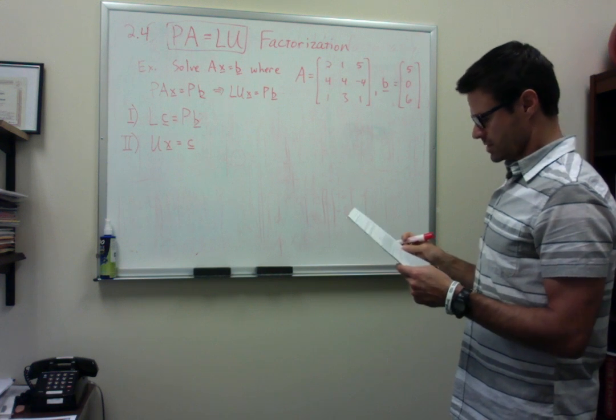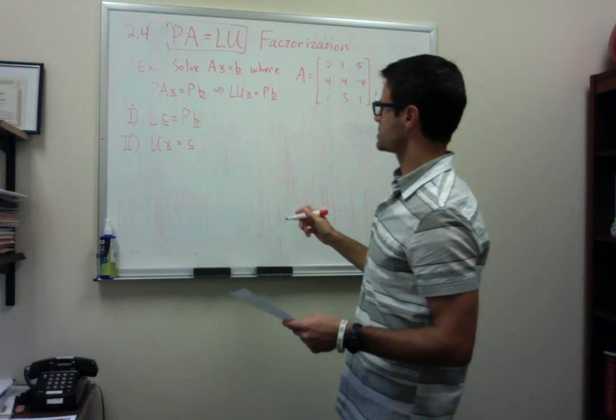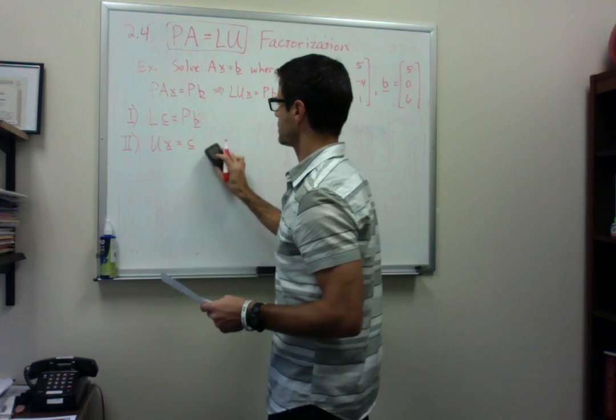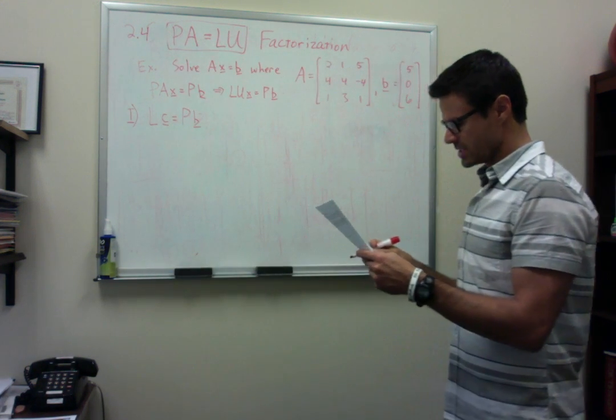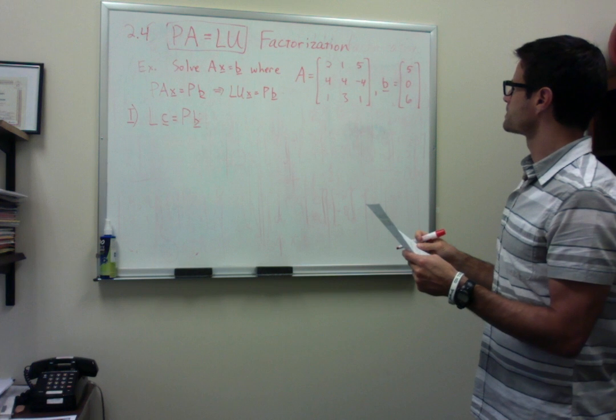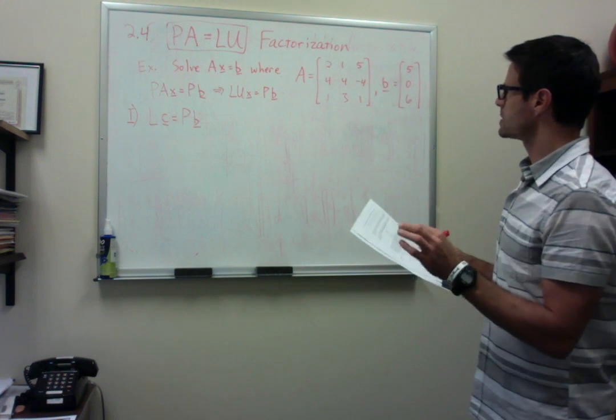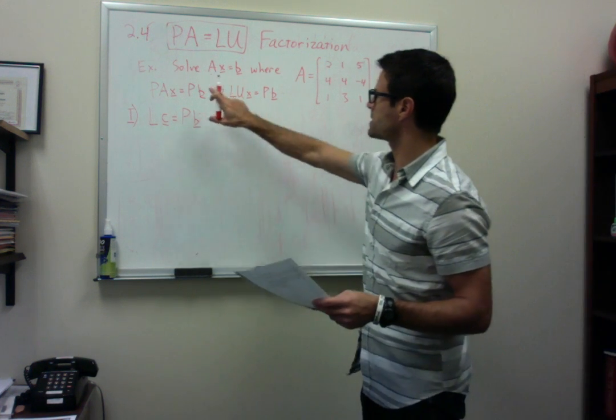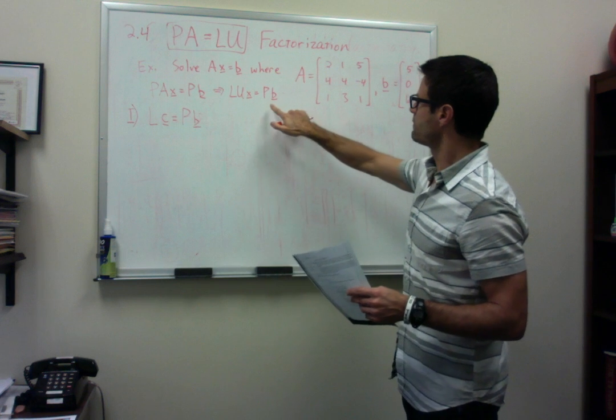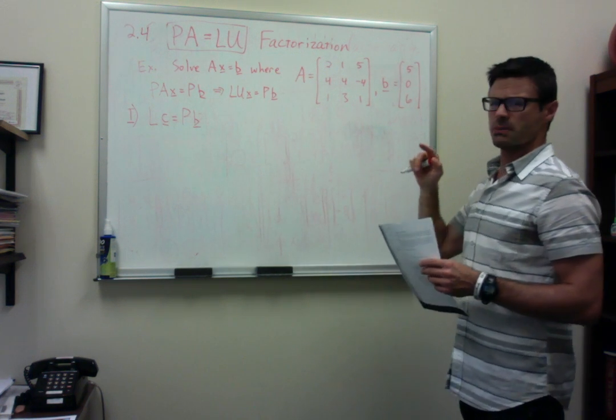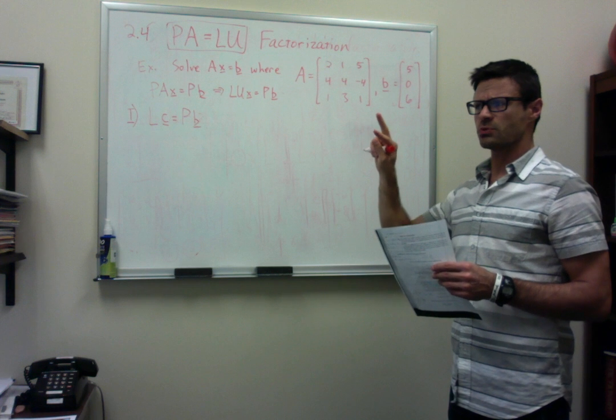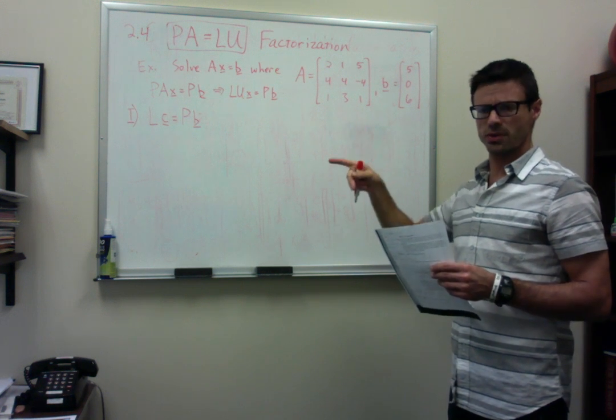So for this problem here, our first step... I'll erase this part here. And to do our first step, we write down the following. Well, I'll have you do this, check this by hand. I don't want to write P down, I don't have much room here. So if you compute P times B, I think what happens... I remember what P did. P switched rows one and two, and then two and three.